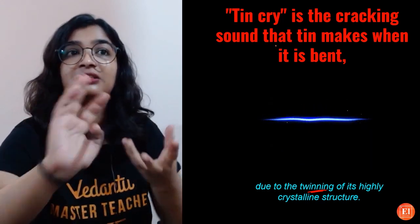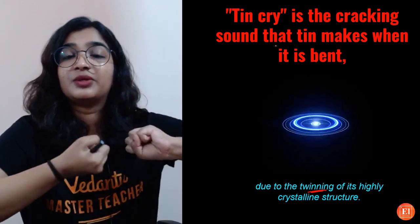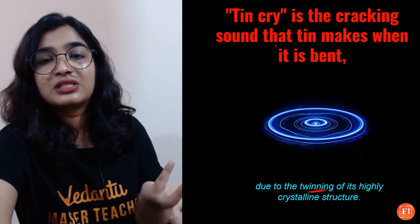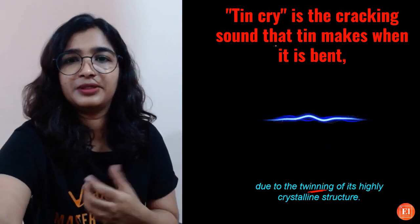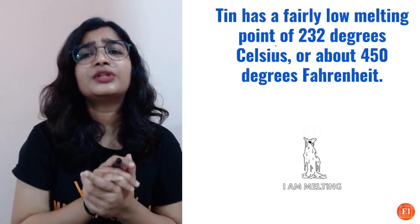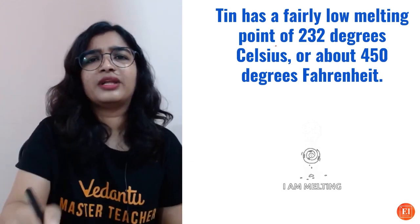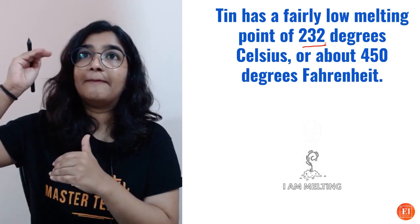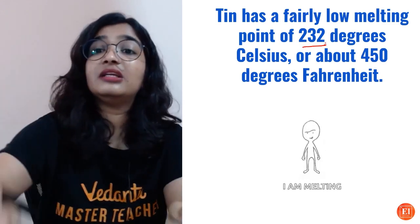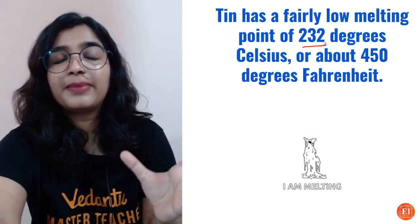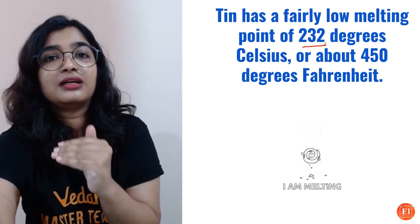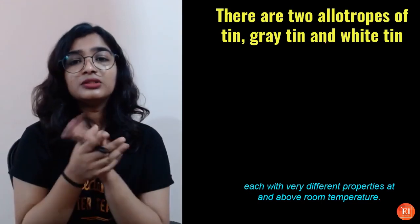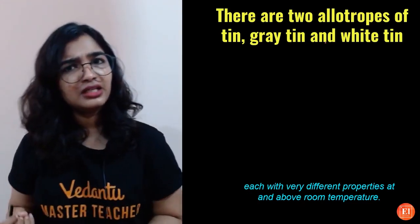Even mercury is similar — when you try to bend mercury, it also produces a similar crying sound. Tin has a fairly low melting point of only 232 degrees Celsius. We know metals generally have very high melting points, so compared to other metals, tin's melting point is fairly low.